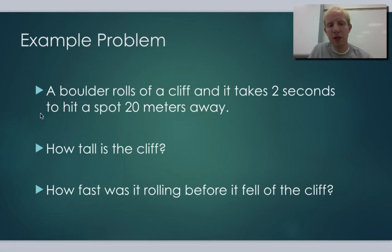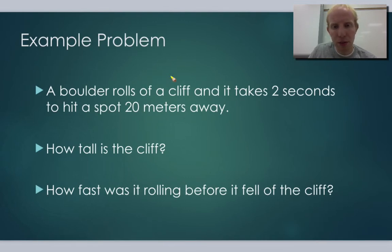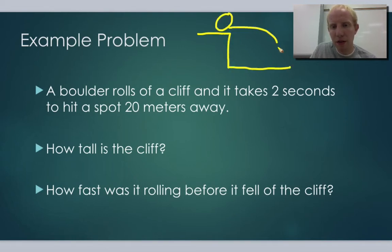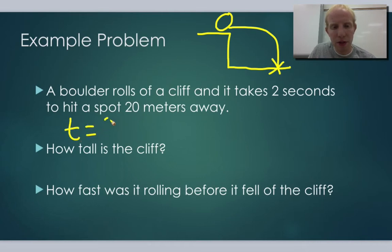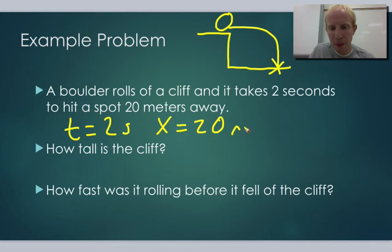Let's try another situation. In this problem, a boulder rolls off a cliff and it takes two seconds to hit a spot 20 meters away. We have a similar situation — a cliff and a boulder rolling off, striking some distance away. But this time we know slightly different information: the time is two seconds and the landing spot is 20 meters away. We can still use the same equations, but we may need to look at them a bit differently.